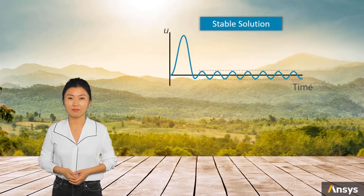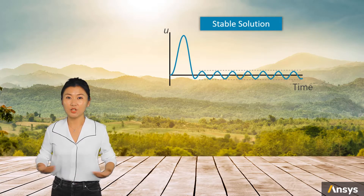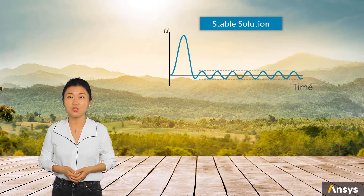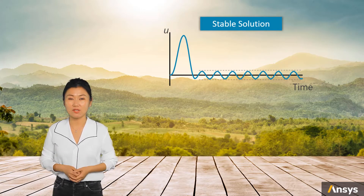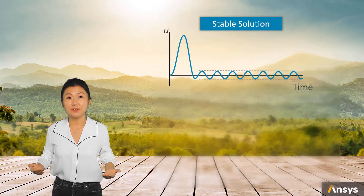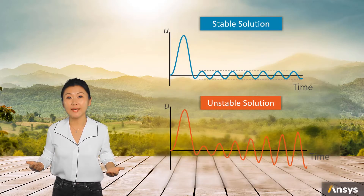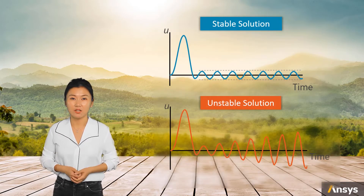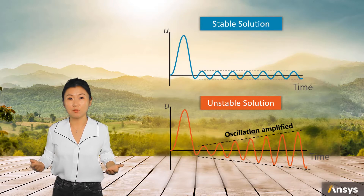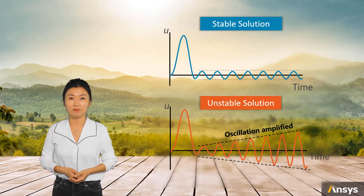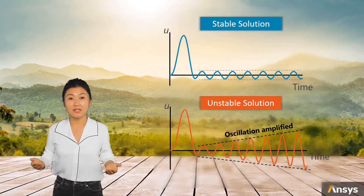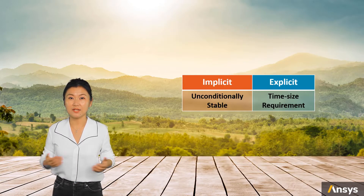The benefit of the implicit method is stability. No matter how large the time step you choose for the implicit method, instability will not occur. Instability happens when rounding errors are magnified — you will find the analysis results become unbounded, leading to an explosive kind of numerical instability. On the other side, the explicit method does not have this stability merit.